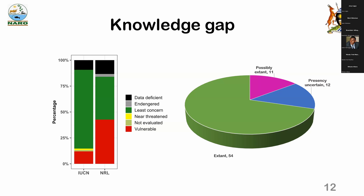We also have 11 fish species which are possibly extinct, 12 fish species whose presence is uncertain, and 54 fish species which are extant. We are seeing significant knowledge gaps, especially on the issues of data deficiency and unevaluated species, which calls for more research.